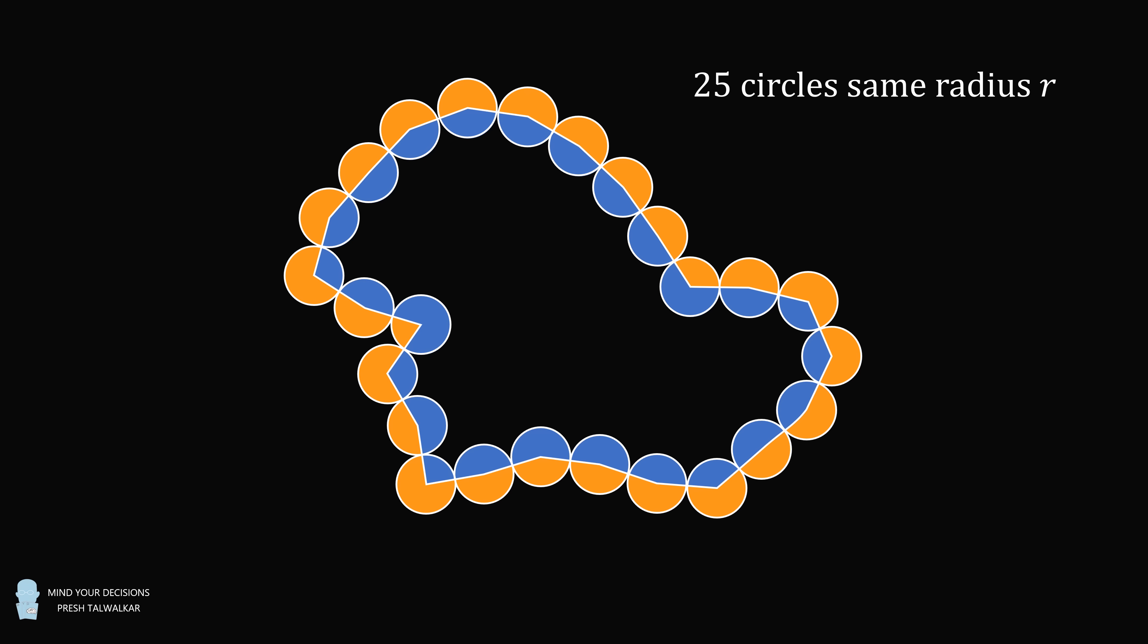Shade the circle's areas that are enclosed or interior to the string in blue, and shade the circle's areas that are exterior or not enclosed by the string in orange. What is the orange area minus the blue area equal to in terms of r?